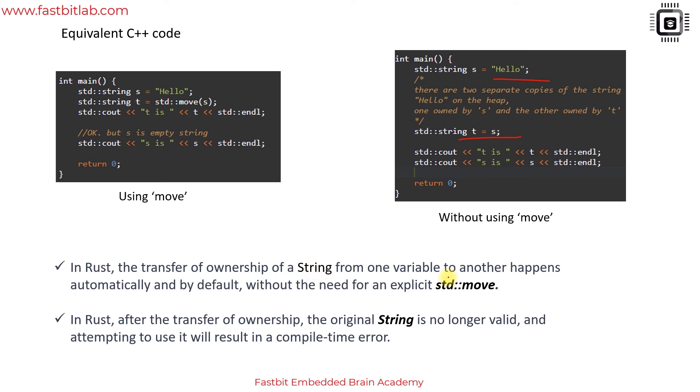Remember that in Rust the transfer of ownership of a string from one variable to another happens automatically by default. This is not just bound to string - it works with various data and data structures which are being allocated in the heap memory.